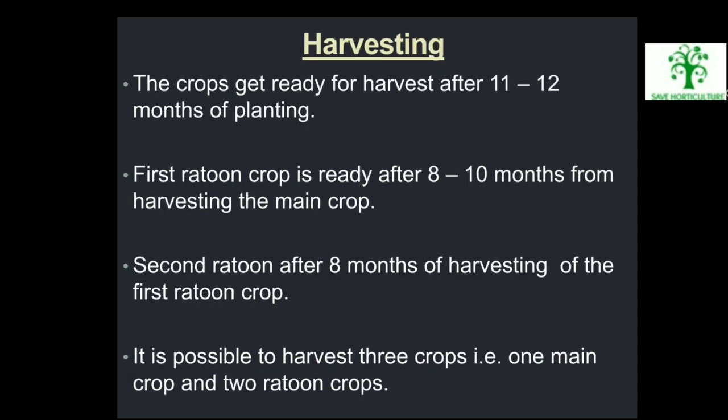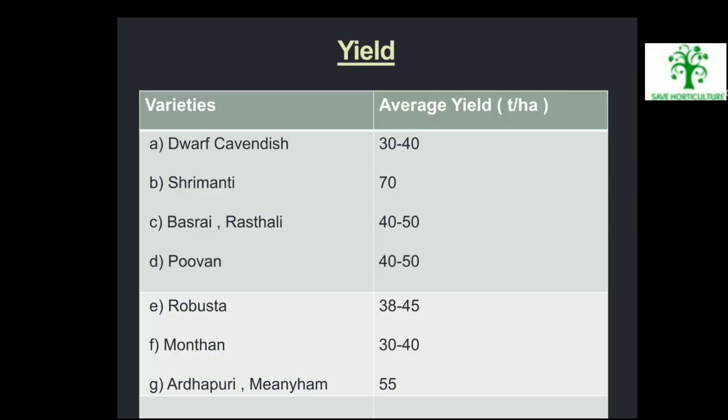Harvesting: The crop gets ready for harvest after 11 to 12 months of planting. First ratoon crop is ready after 8 to 10 months from harvesting the main crop. Second ratoon after 8 months of harvesting of the first ratoon crop. It is possible to harvest three crops — one main crop and two ratoon crops. Yield — varieties and yield in tons per hectare: Dwarf Cavendish 30–40 t/ha, Srimanti 70 t/ha, Basrai and Rastali 40–50 t/ha, Puvan 40–50 t/ha, Robashta 38–45 t/ha, Monthan 30–40 t/ha, Ardhapuri and Mianham 55 t/ha.